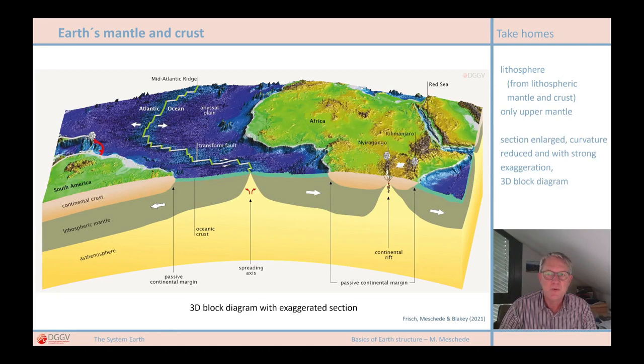Here, you can see the South Atlantic and the two adjacent continents of Africa and South America. And with this exaggerated representation, we can also show the spreading zones and trenches more understandably. But with such exaggerated representations, which I will use frequently in this video series, we must always be aware that the lithosphere is only one to two millimeters thick when we draw it in such realistic dimensions.